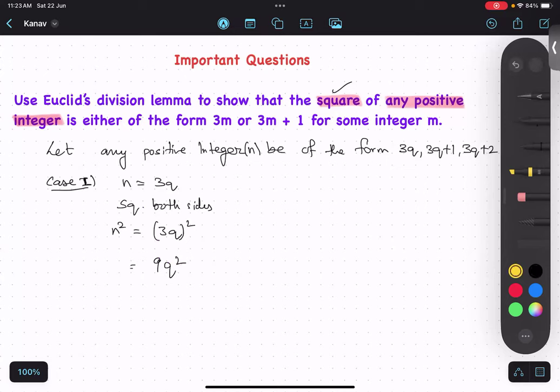Now question is asking us to convert this into either. Either means not both, one of them, anyone. The question is saying write in the form of 3 table or 3M plus 1. So this can be converted into 3 table, yes or no? Yes. Like this, 9 can be written as 3 into 3. Therefore it is 3M where M equals to 3Q square. Understood?